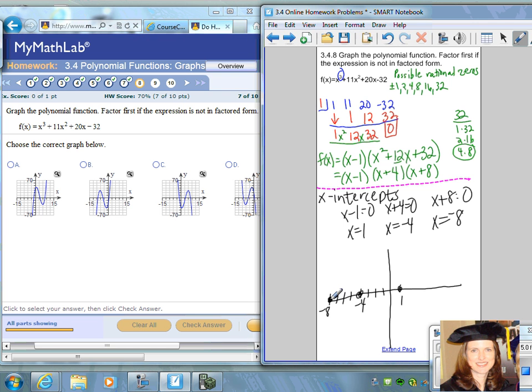Now you can determine if the graph is going to end high or low. Since the leading term is x³, that's a positive leading term, so we know it's going to end up high. It's odd, so it's going to do the opposite on the other end.